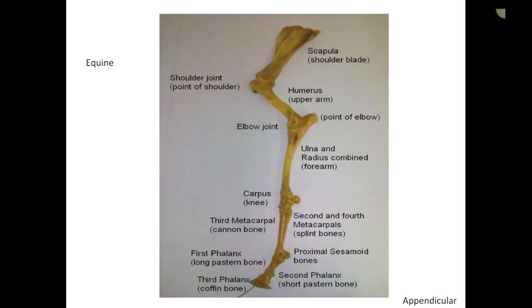In an equine front limb: scapula, humerus, point of the elbow — the olecranon — then the fused ulna and radius, and a carpus referred to as the 'knee' in horses. Then the third metacarpal — also called the cannon bone — and the second and fourth metacarpals called the splint bones, which are essentially fused together with a fibrous joint. Then phalanx one, two, and three, as well as proximal and distal sesamoid bones.